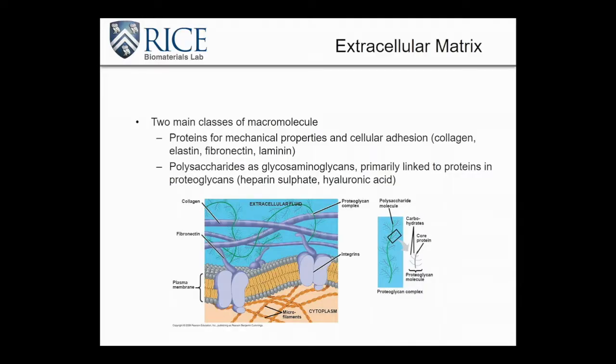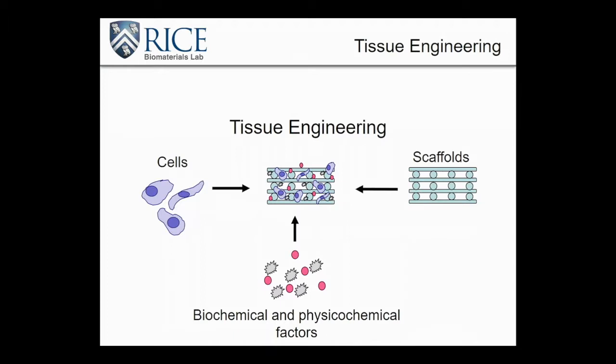These are all things that we will talk about how we can guide in 3D printing. It's also important to understand how we might do that, which includes incorporating the two main classes of macromolecules found in the ECM: proteins and polysaccharides, which are linked to proteoglycans. There's a complex pathway in which the extracellular matrix interacts with cells. I encourage anyone interested in replicating a certain type of tissue to investigate that particular tissue's extracellular matrix to get a better understanding of what you want to incorporate when doing 3D printing.